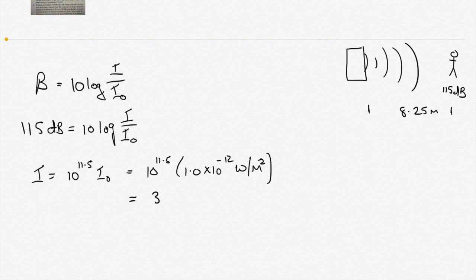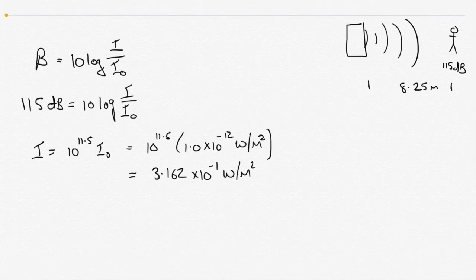So when we do that little calculation, we get 3.162 by 10 to the minus 1 watts per meter squared. So that 115 decibels translates into a sound intensity of 3.162 by 10 to the minus 1 watts per meter squared. Now what we want to figure out is, what is the power based on that intensity?